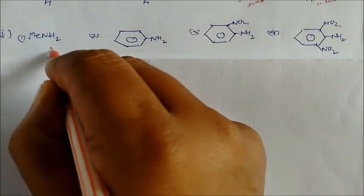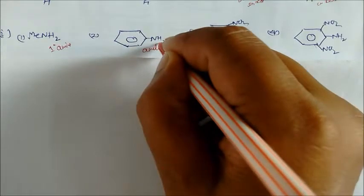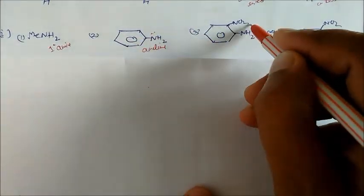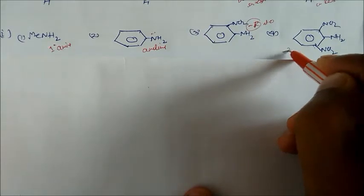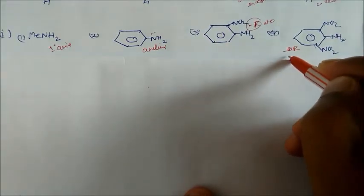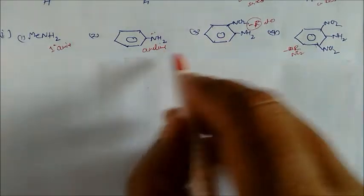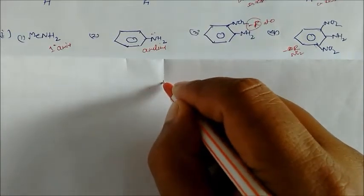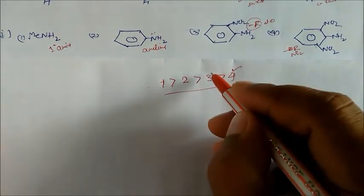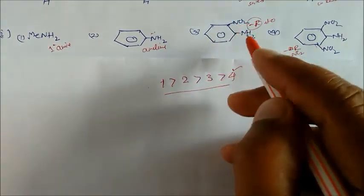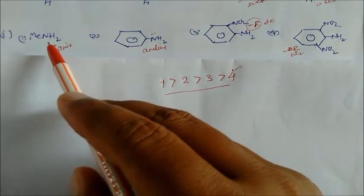Comparing a primary amine with aniline derivatives: aniline's lone pair is engaged in resonance. One compound has a –R group at the ortho position; another has two nitro groups at positions 1 and 5. The order of basicity is: primary amine (1) > compound 2 > compound 3 > compound 4, which is the least basic due to two NO2 groups.